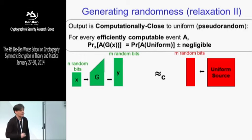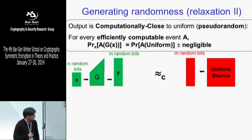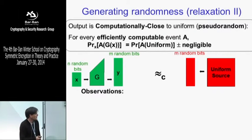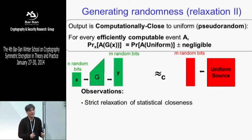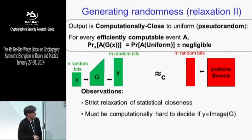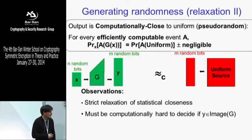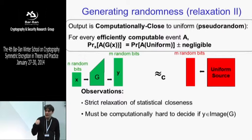Can we achieve this notion? Maybe. So prove it and we'll have a school about your result. One observation: this is a strict relaxation of statistical closeness, since we now quantify only over efficiently computable events, a strict subset of all events. Also, we must require that deciding if a string is in the image of G be computationally hard. Otherwise we can apply the previous argument, and we'd have an efficiently computable event that distinguishes the two distributions.